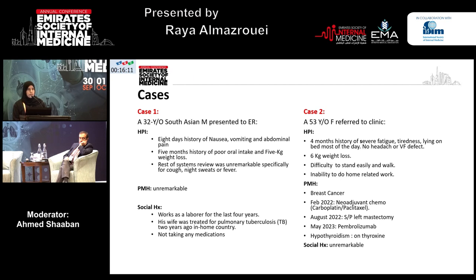Our first case is a 32-year-old Asian male who presented to the ER with an eight-day history of nausea, vomiting, and abdominal pain, and a five-month history of poor oral intake and weight loss. His important history is significant only for his wife, who had been treated for TB a few years back in his home country.